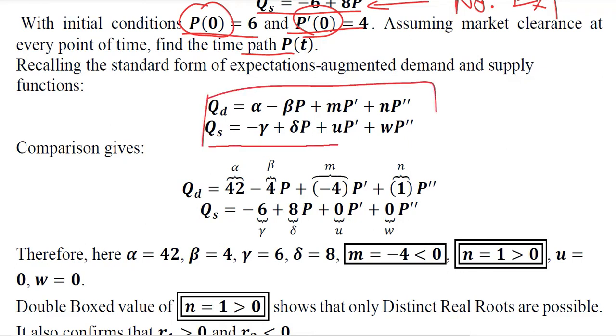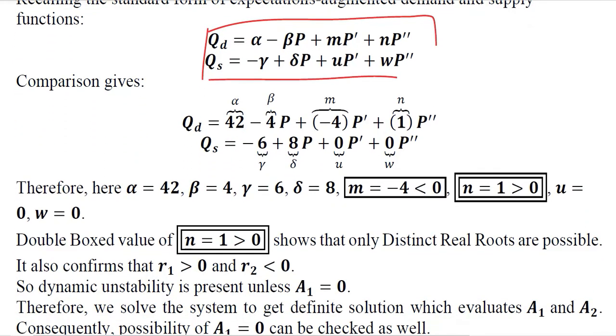Primarily we should extract the values by comparing with the standard forms of the QD and QS equations. So QD and QS in their standard forms look like this, and now we can compare them. By comparison we get alpha, beta, M and N.